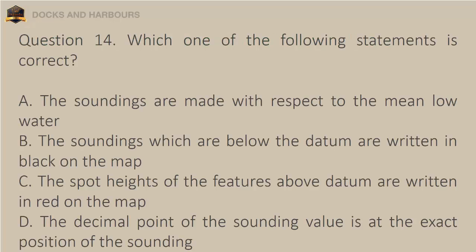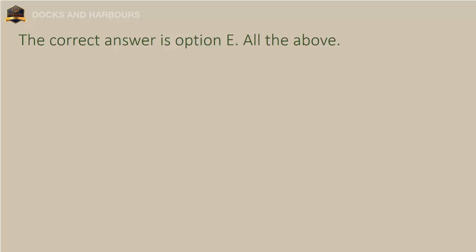Question 14. Which one of the following statements is correct? a. The soundings are made with respect to the mean low water. b. The soundings which are below the datum are written in black on the map. c. The spot heights of the features above datum are written in red on the map. d. The decimal point of the sounding value is at the exact position of the sounding. e. All the above. The correct answer is option E: All the above.